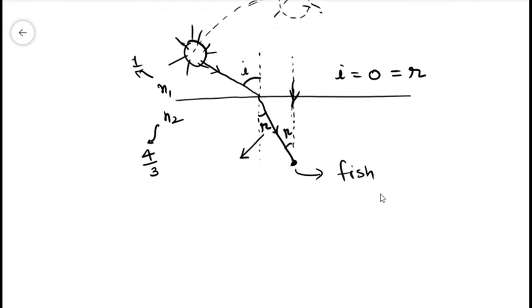So what is the angular speed of the sun which is perceived by the fish? It will be simply the time derivative of the angle r, that is dr over dt.